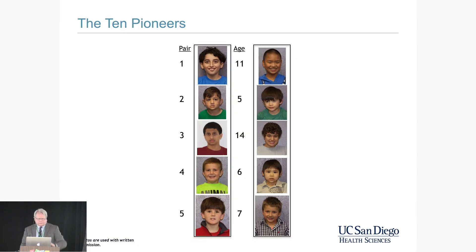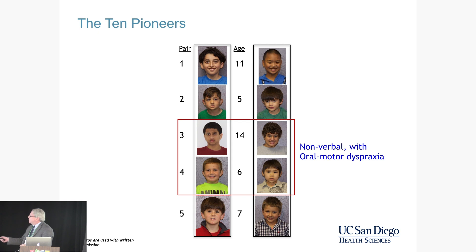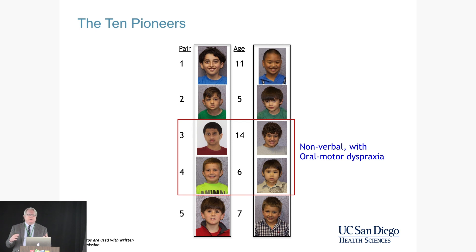These are the ten pioneers. We had boys paired by age, autism severity, and IQ, then randomized to receive either Suramin or placebo. We had four young men who were non-verbal with very severe motor dyspraxia — hadn't spoken anything more than fragmented words or up to two words together. What we started noticing after beginning the infusions is half the kids weren't showing any change, and half the kids were showing dramatic change — a child gaining developmental milestones with accelerating momentum.